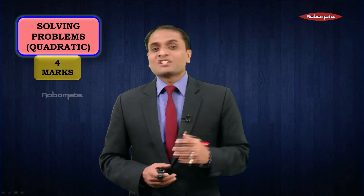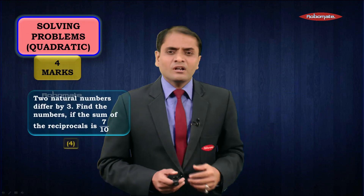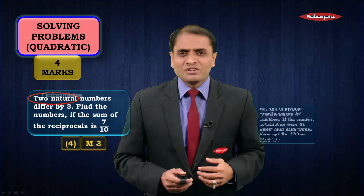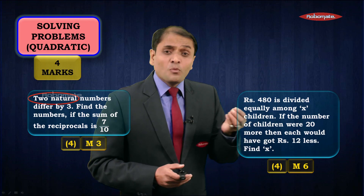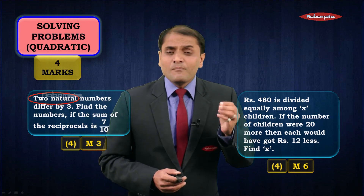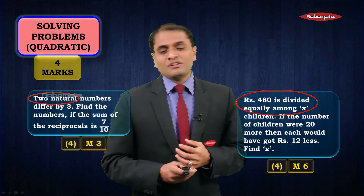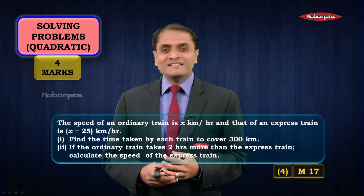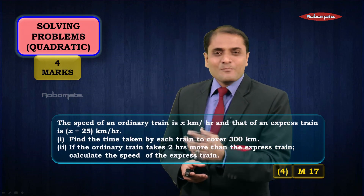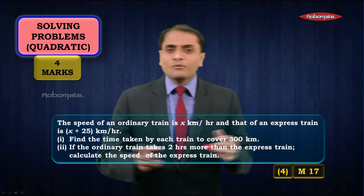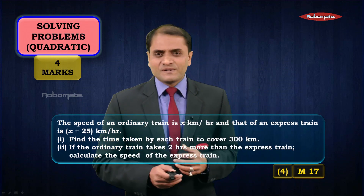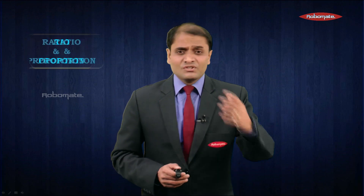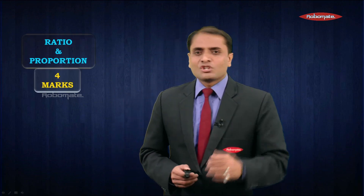Moving on to solving word problems based on quadratic equations — again, you can expect a question of four marks. You may get a word problem based on two natural numbers, or a typical question like 'rupees 480 is equally divided among a certain number of children.' You can also have a question on speed, distance, and time, or a word problem based on the ages of persons. These are the typical types of questions normally asked from solving problems based on quadratic equations.